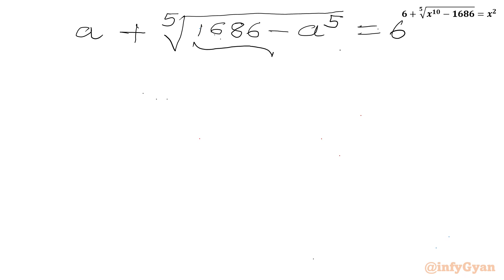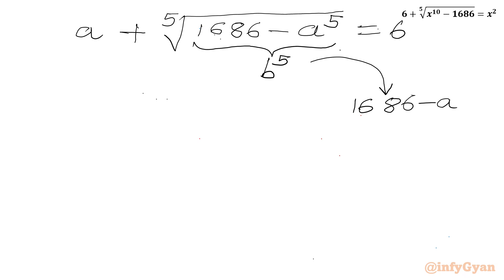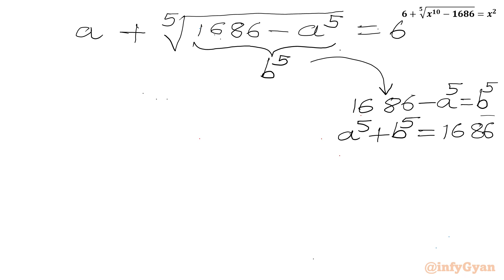Let us consider the radicand equal to b to the power 5. From here we get our first equation: 1686 minus a to the power 5 equals b to the power 5, or equivalently a to the power 5 plus b to the power 5 equals 1686. Let us call this equation 1.